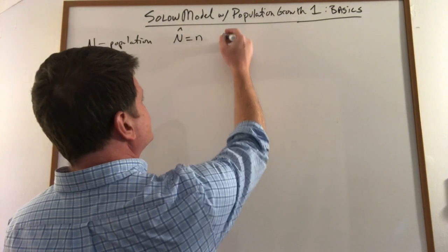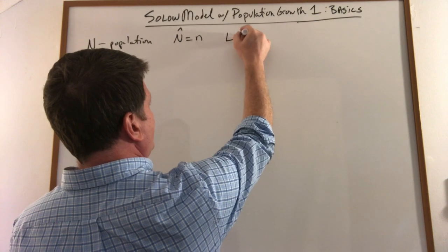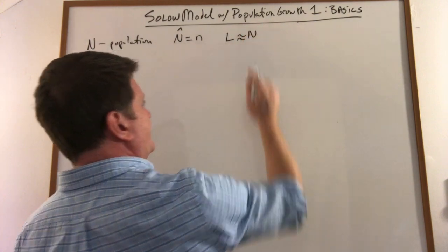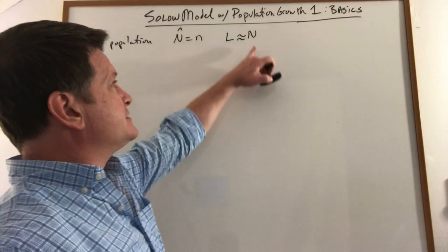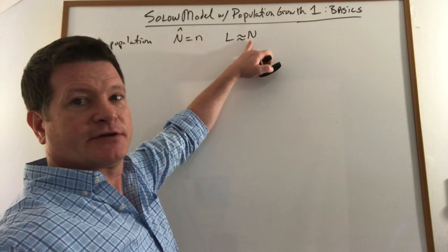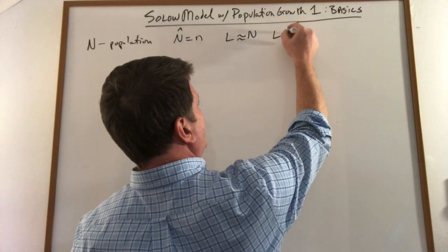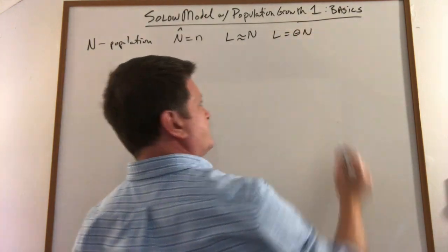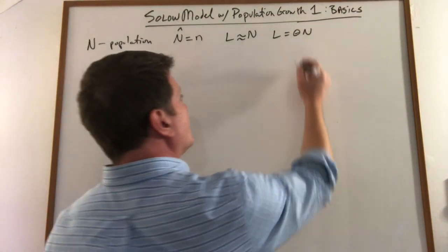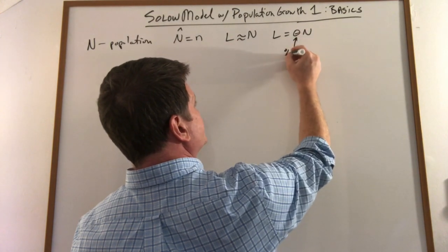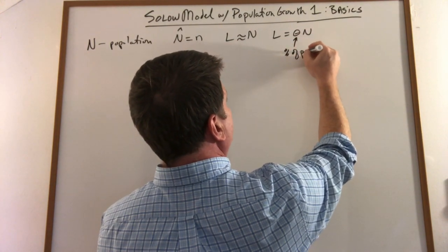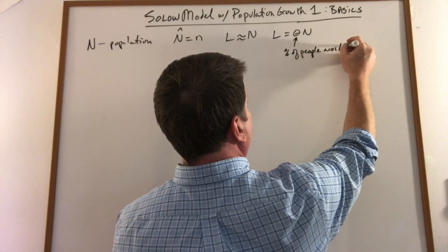Now we'll also generally flip-flop between N and L because really from any population there's a constant fraction of people who are in your labor force. So I could write L as some constant fraction of N where this is the percent of people working.